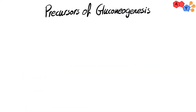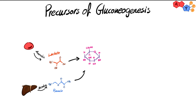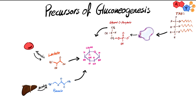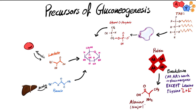A carbon source is required for glucose production. Important substrates for gluconeogenesis are: lactate from anaerobic glycolysis, pyruvate from aerobic glycolysis, glycerol-3-phosphate from the breakdown of triglycerides in adipose tissue, and gluconeogenic amino acids from protein breakdown. All amino acids except leucine and lysine — the two L's — are gluconeogenic amino acids. Alanine is the major gluconeogenic amino acid.